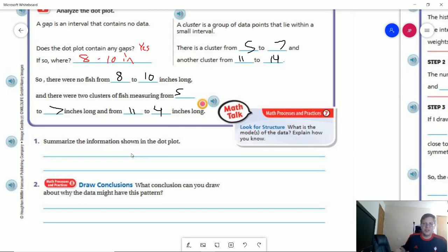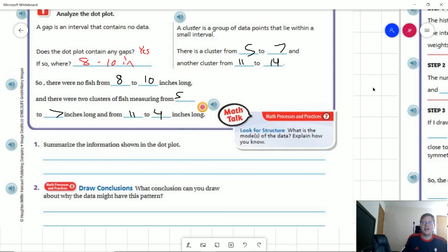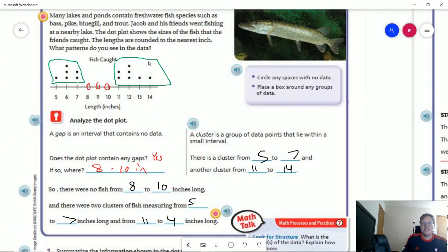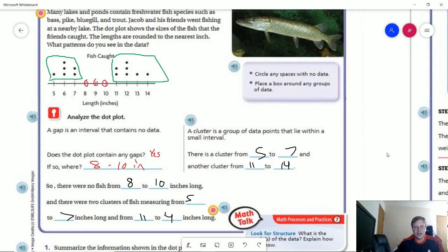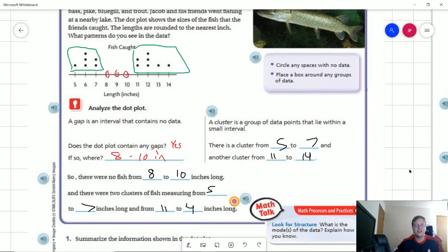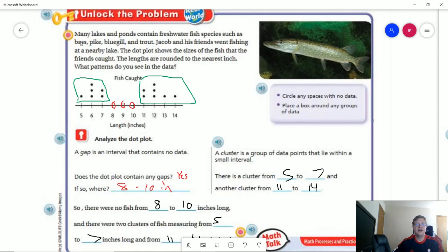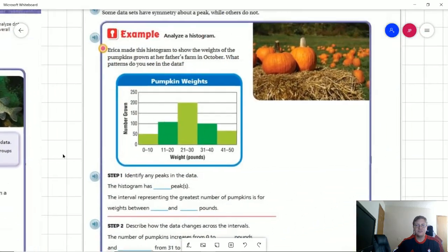And so let's look at number two. So what conclusion can we draw about why the data might have this pattern? So why do we have groups that are 5 to 7 inches and groups that are 11 to 14, but we have this gap where we don't have anything that is 8 through 10 inches? So think about that for just a second, pause the video if you need to. So assuming that you paused the video, I'll go ahead and continue. So one of the reasons could be just the type of fish. They give a variety of different types of fish. I know bluegill tend to be a little bit smaller. Bass and trout tend to be a little bit larger. So it could be that we only had two kinds of fish that were actually caught.